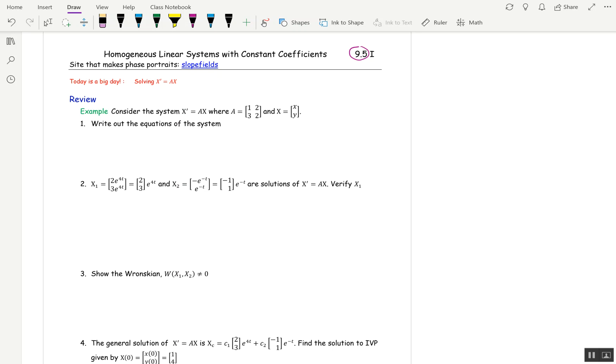Write out the equations of the system. I always do this in two parts. First, I write the matrix equation. Big X prime is (x prime, y prime), and that's equal to A times X, which is (x, y).